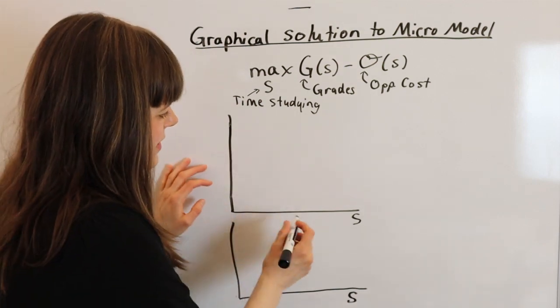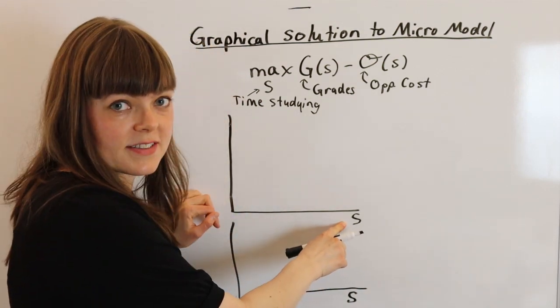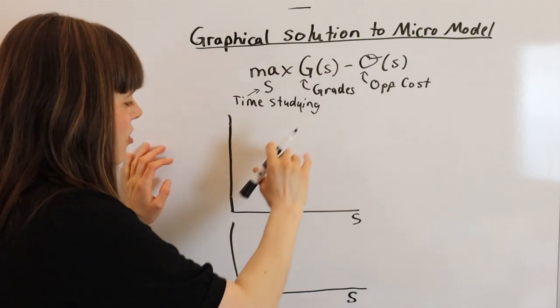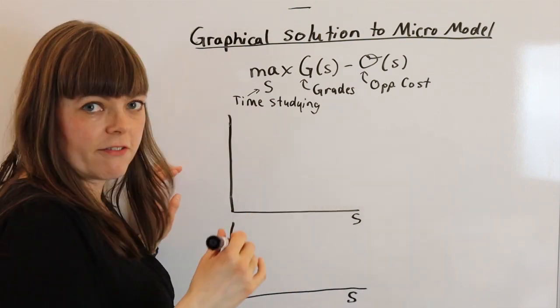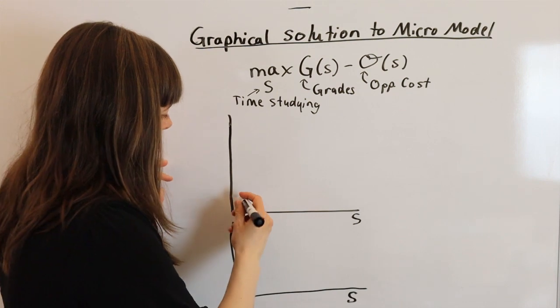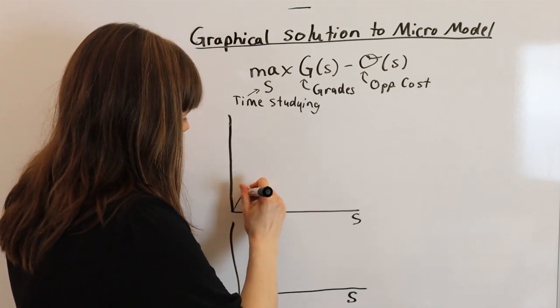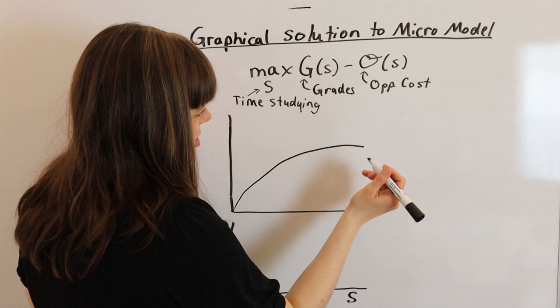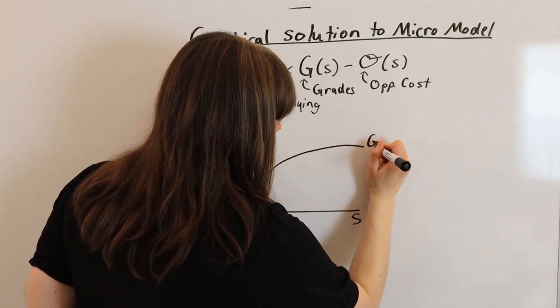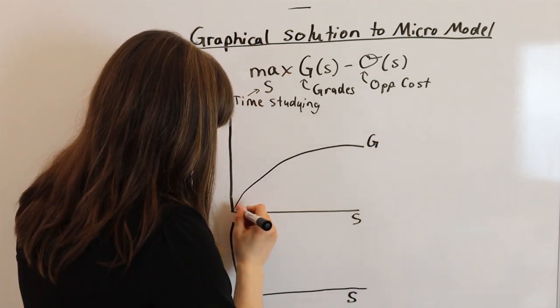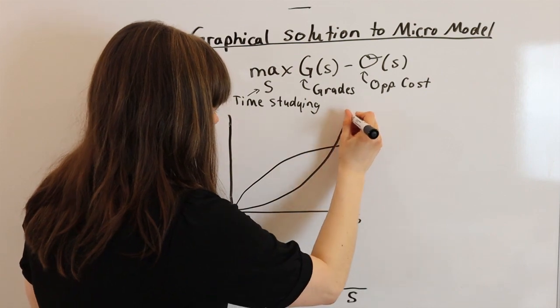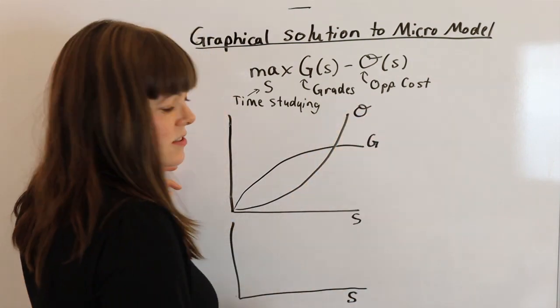When we graph this, we put our choice variable on the x-axis, and on this graph, put both the graph of our benefit and the graph of our cost on the same graph. I talk about the shapes of these graphs in another video. We have diminishing marginal benefits, so this is our grades function. We have increasing marginal cost, so this is our opportunity cost function.